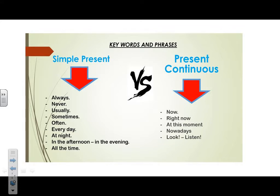Here are the keywords that let us know if the sentence is in the Present Simple or the Present Continuous. The Present Simple keywords are: always, never, usually, sometimes, often, every day, at night, in the afternoon, in the morning, in the evening, all the time. The Present Continuous keywords are: now, right now, at this moment, nowadays, look, listen, and at the present.